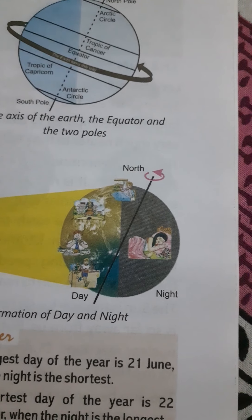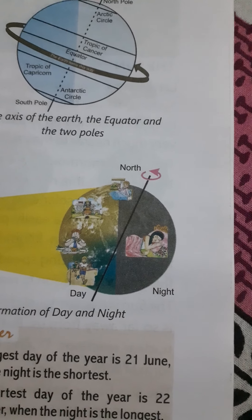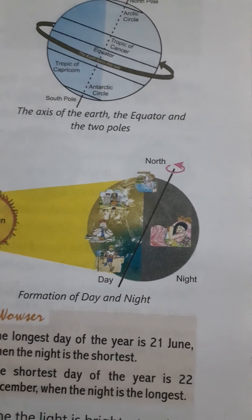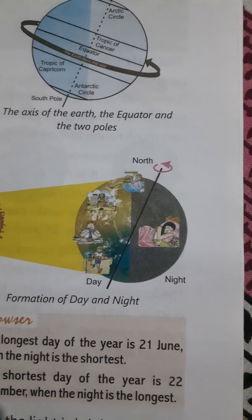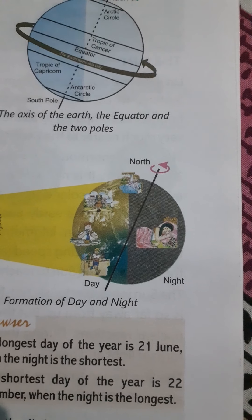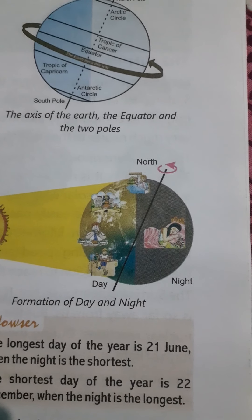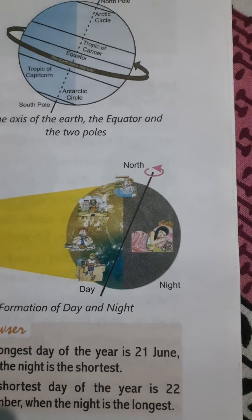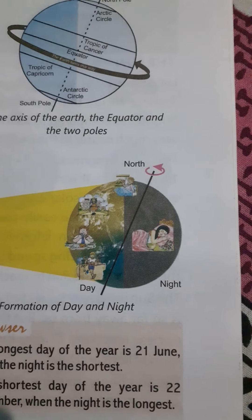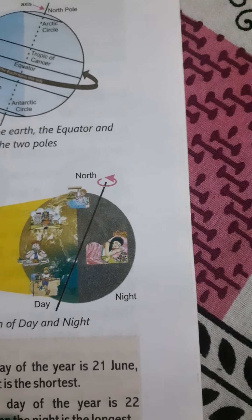We always say that the Sun is rising in the east, but the Sun never actually rises or sets — it has a fixed place. We feel that the Sun is rising and setting only because our Earth is rotating on its axis.